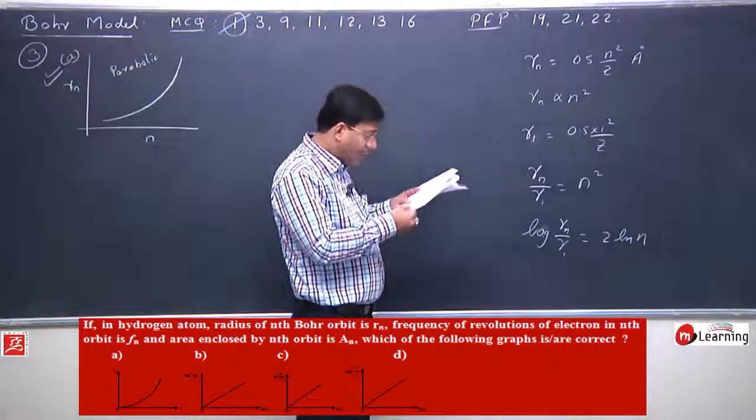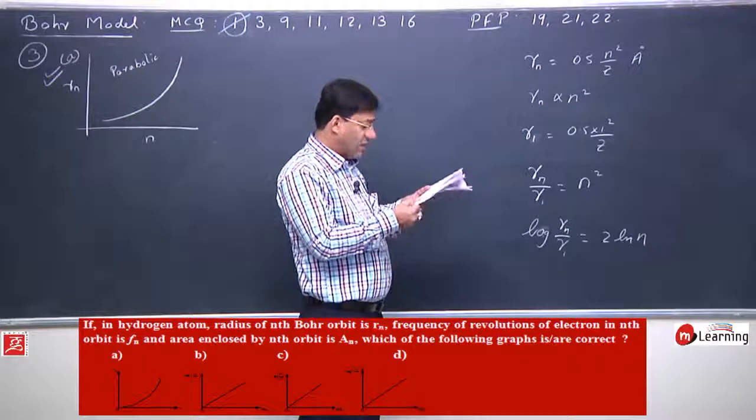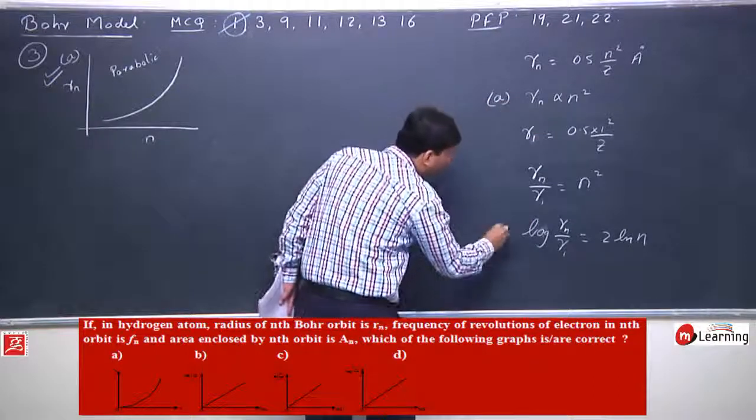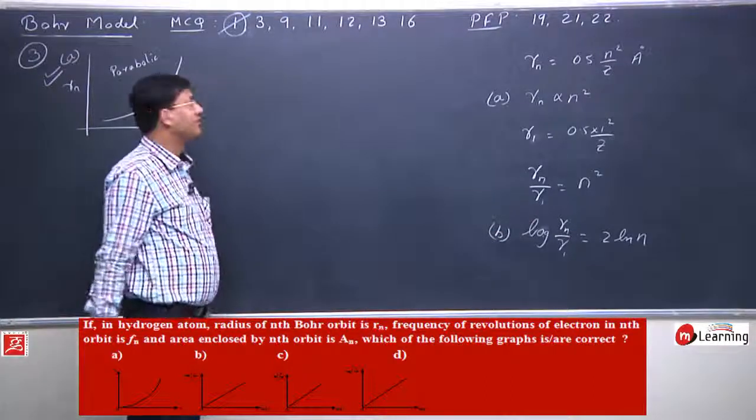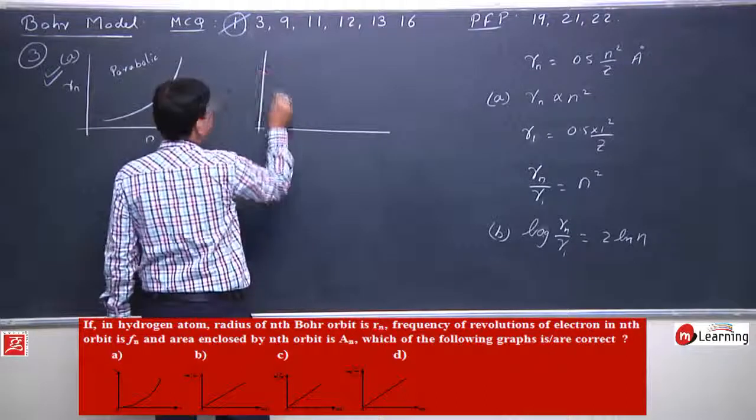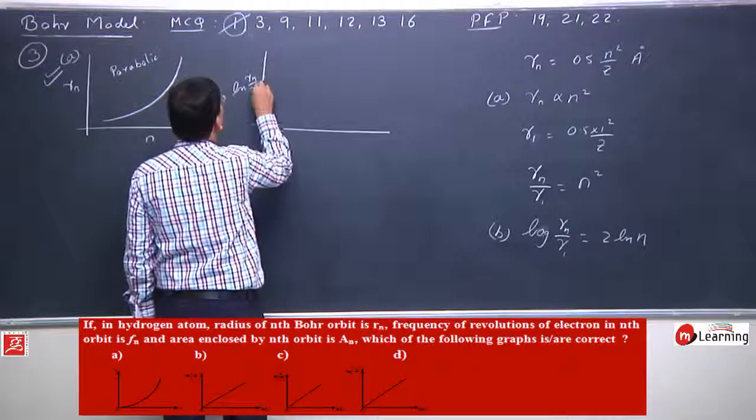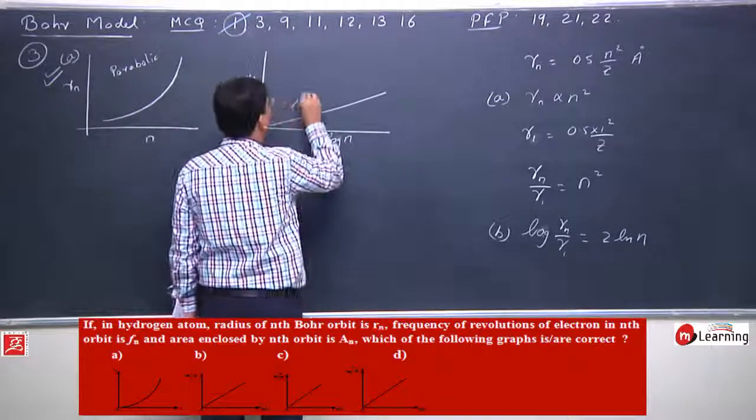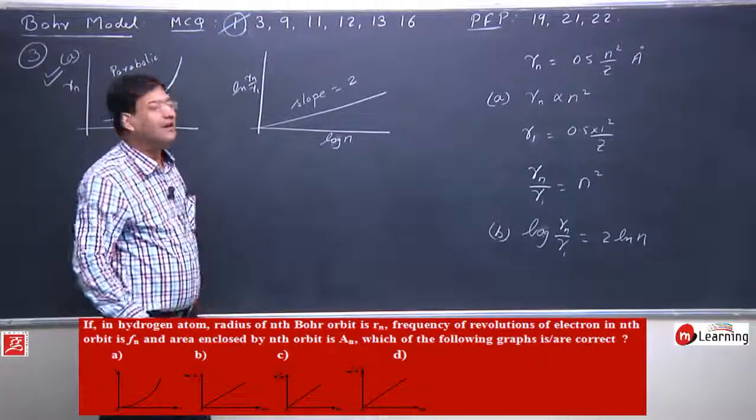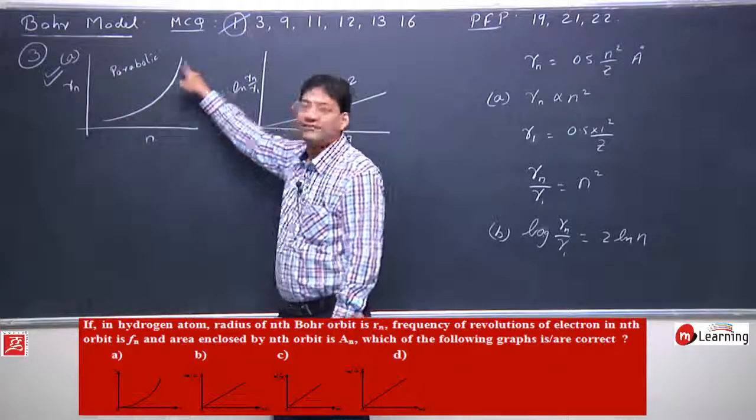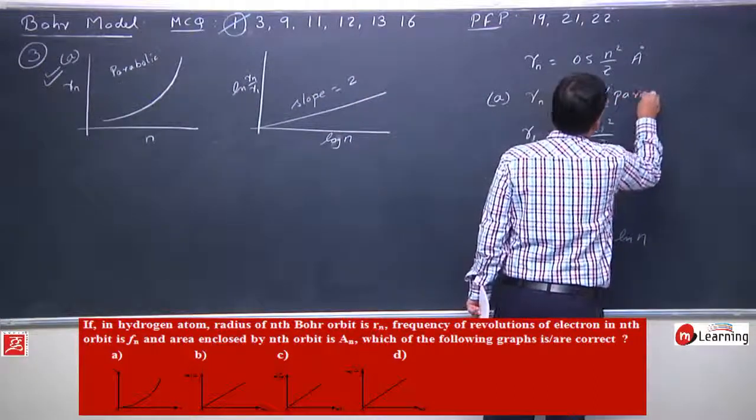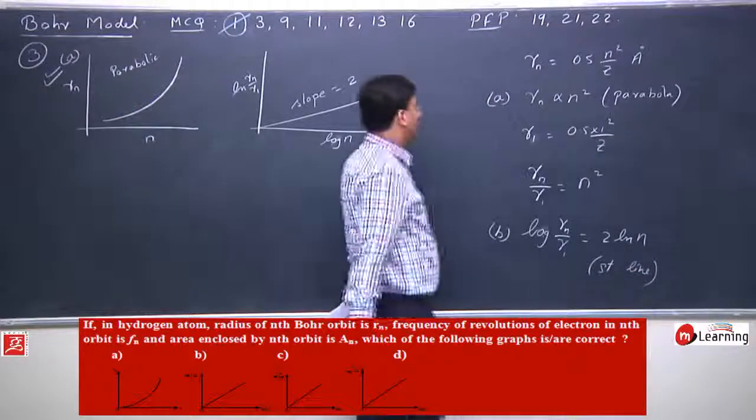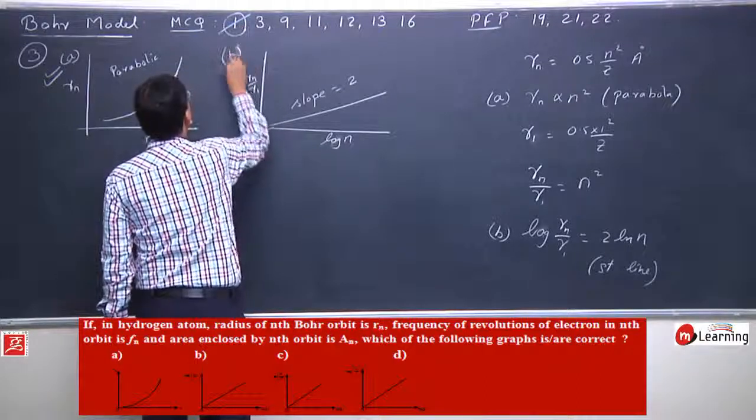So log rn upon r1 versus log n, here this should be straight line. So here you have a straight line. This is equation of parabola and this is equation of straight line. So a and b here are the two options right now.